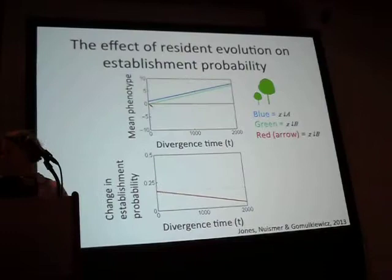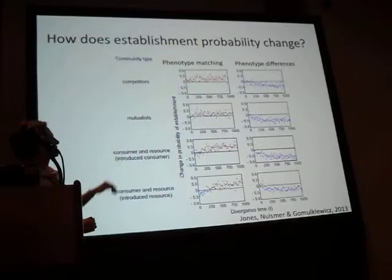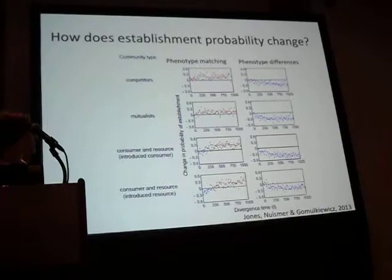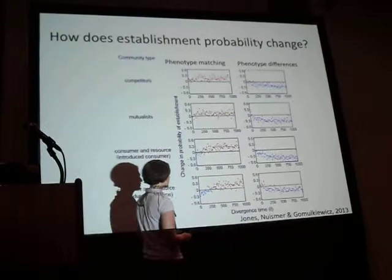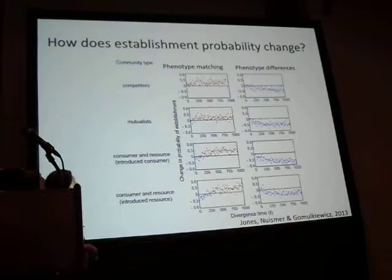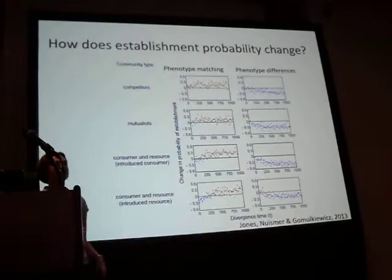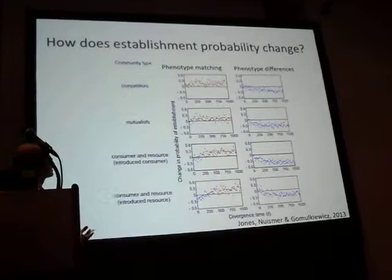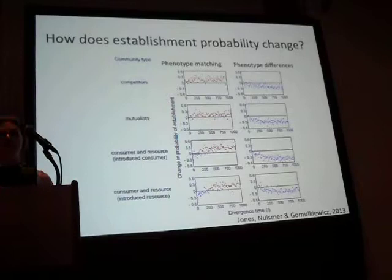We have analytical results, but I'm going to show you the results from individual-based simulations, which draw parameter values from random distributions to show that the results are very robust. On the x-axis is divergence time, and on the y-axis is the change in probability of establishment of the introduced species. Red dots mean an increase in establishment probability, and blue dots mean a decrease. Importantly, the type of community — competitors, mutualists, or consumers and resources — doesn't have much of an effect on the relationship between phylogenetic distance and establishment probability.